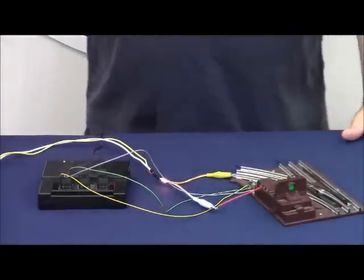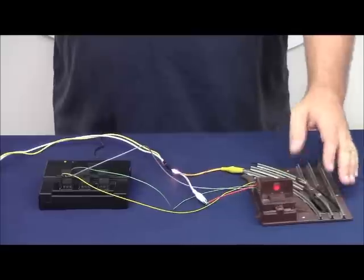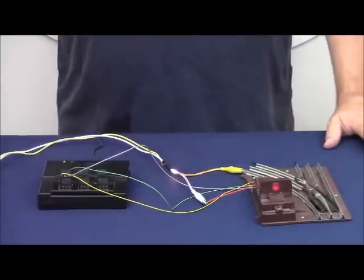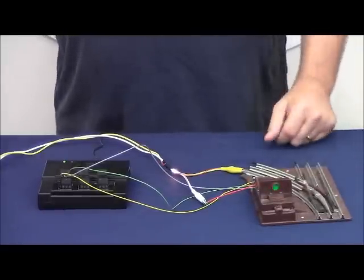Test it again. Aux two - we get the switch to throw to the diverging route. Aux one - switch throws straight.